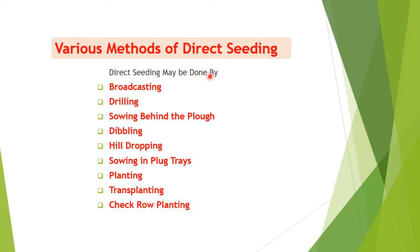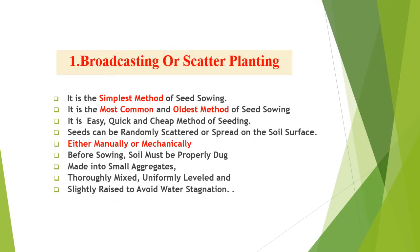The various methods of direct seeding include broadcasting, drilling, sowing behind the plow, dibbling, hill dropping, sowing in plug trays, transplanting, and check row planting. We'll discuss these one by one. Broadcasting or scatter planting is the simplest, most common, and oldest method of seed sowing.